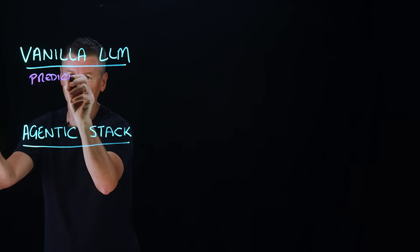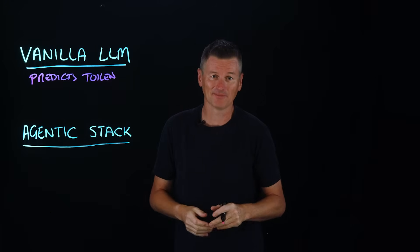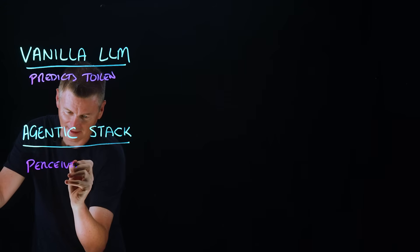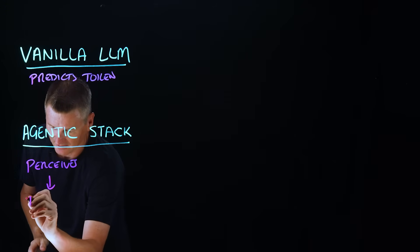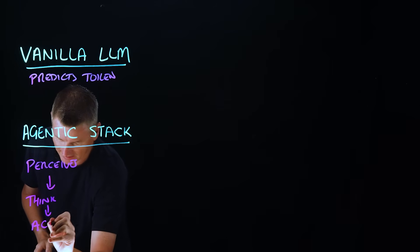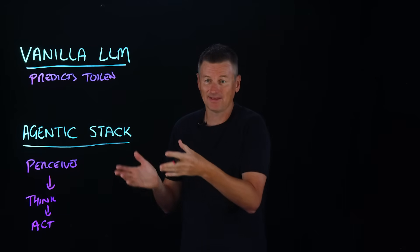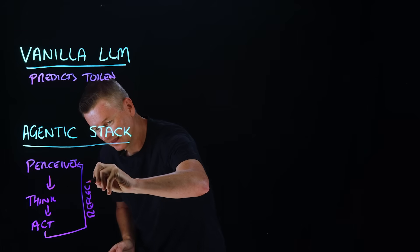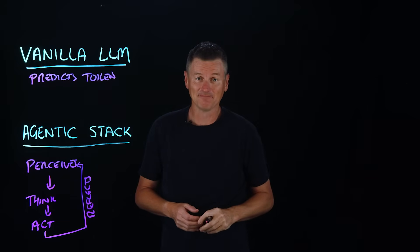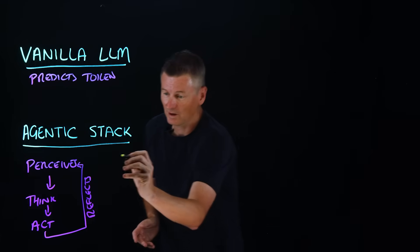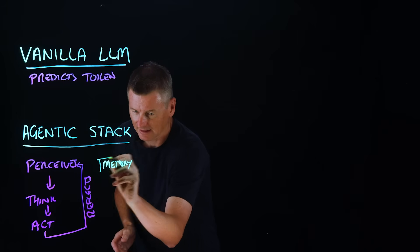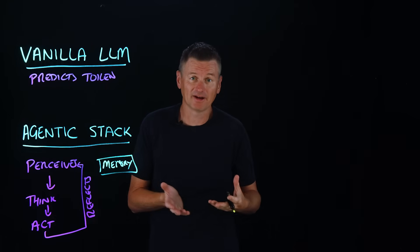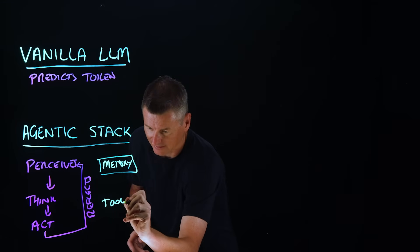A vanilla LLM predicts the next token in a sequence — that's how LLMs work. But an agentic stack goes through a bit more than that. The first stage is it perceives its environment, then it thinks about strategy, then it acts on that strategy. And what makes the agentic stack so interesting is that there is then a self-reflection area where the model actually goes back and reflects and goes round again and again. These agents also include a memory tier — that might be short-term memory like a scratch pad, or long-term memory like a vector database store.